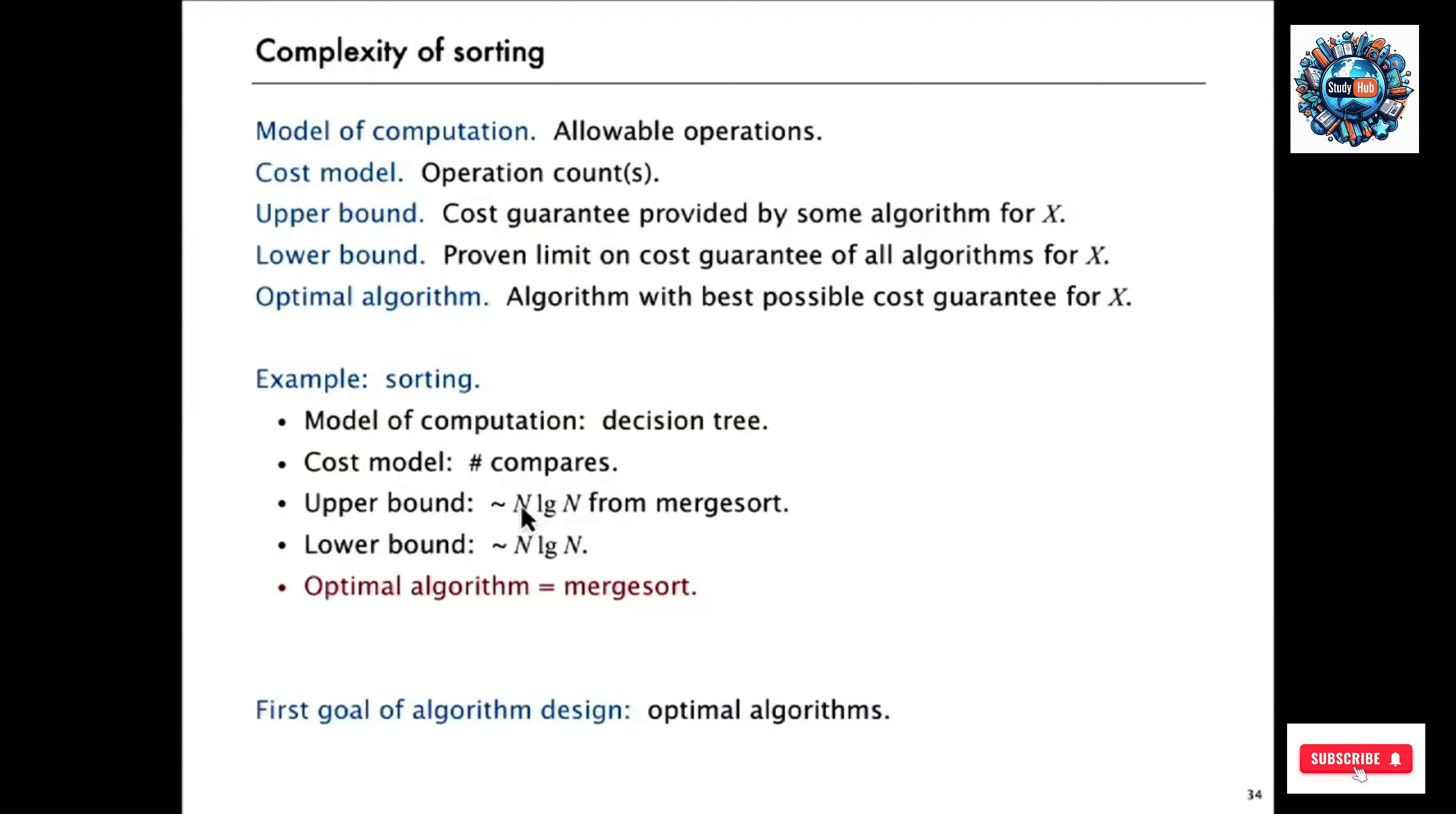So we knew that the upper bound was proportional to N log N. And we just proved that the lower bound is proportional to N log N. And that means that merge sort is an optimal algorithm. That's the first goal of algorithm design - to try and find optimal algorithms for the problems that we need to solve.